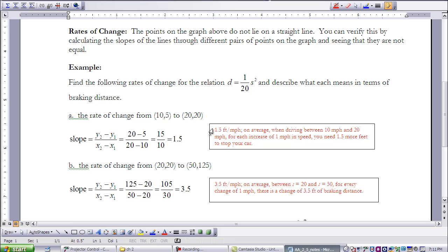So let's look at the rate of change from (20, 20) to (50, 125). Use our slope equation again, 125 minus the 20 over 50 minus the 20 gives me a rate of change of 105 over 30, which is 3.5. So as our speed was increasing, we actually need more feet, more space to stop. So for every 3.5 feet per mile per hour, on average that is between a speed of 20 and speed of 50, for every change in 1 mile per hour, there is a change of 3.5 feet of braking distance.